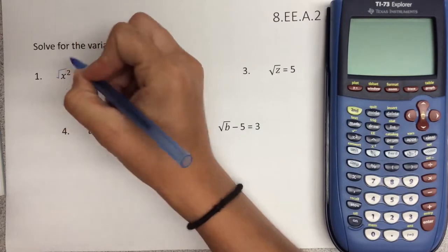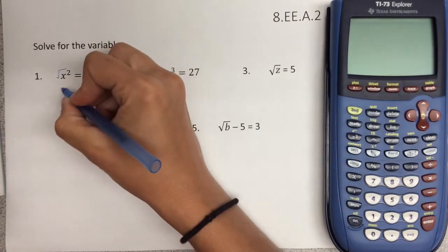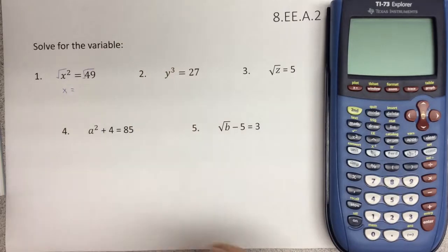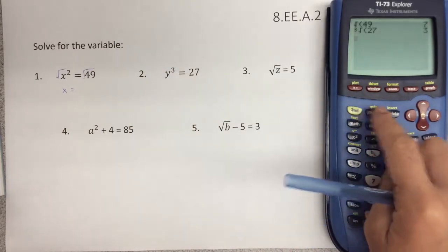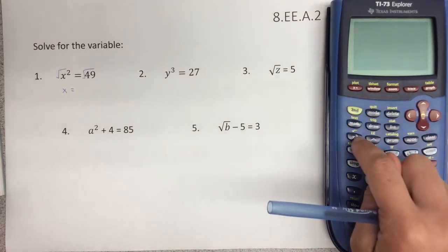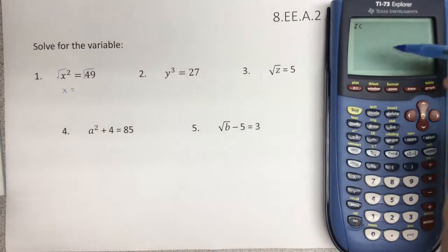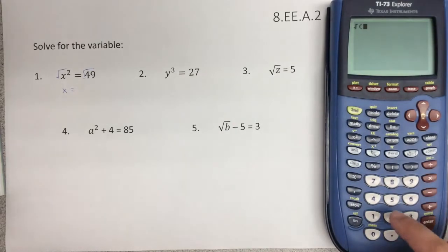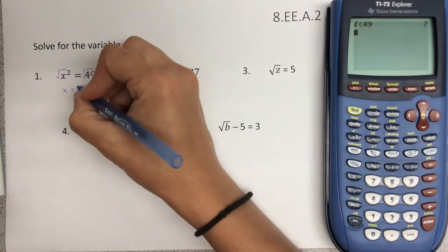So if we take the square root of both sides, the square root of x squared is x, and the square root of 49, if we do it in our calculator, you're going to press second x squared. That gives you your square root symbol right there. Type in 49, press enter, which is 7.